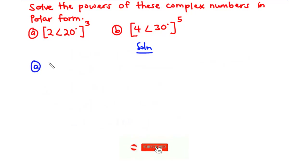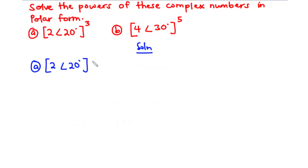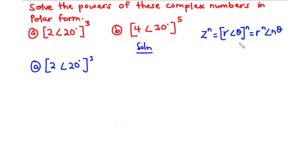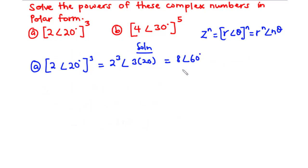For a, we have 2 polar 20 all exponent 3. We said that given z exponent n equals r polar theta all exponent n, we simplify this as r exponent n polar n times theta. Applying this here, this becomes 2 exponent 3 polar 3 times 20. 2 exponent 3 is 8, so our answer is 8 polar 60.